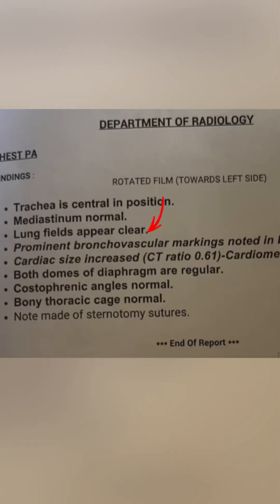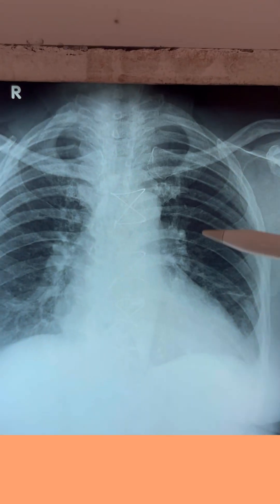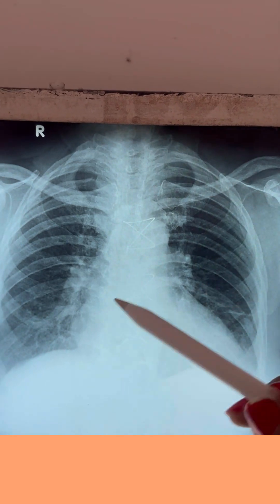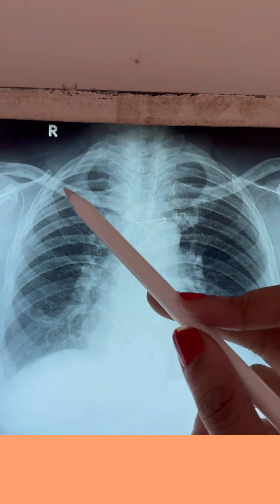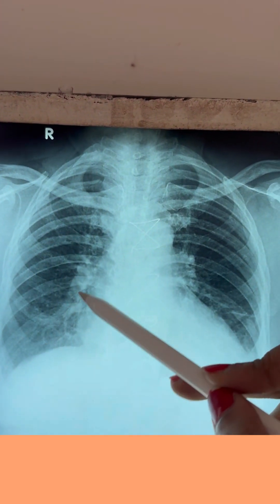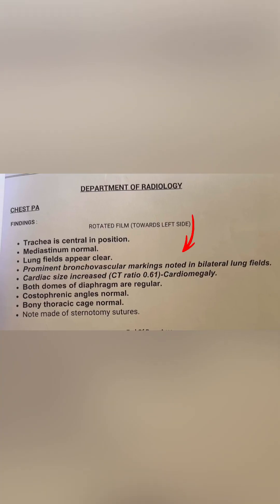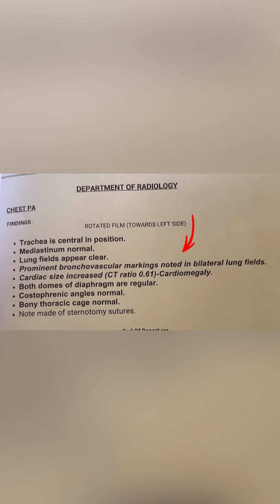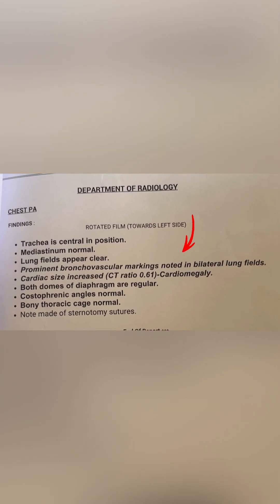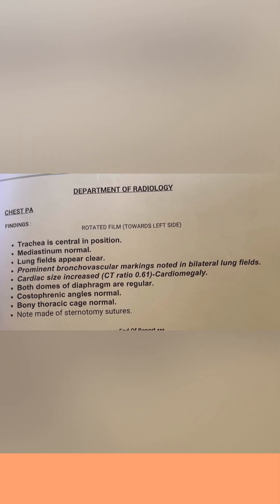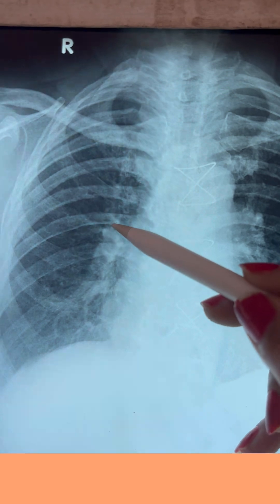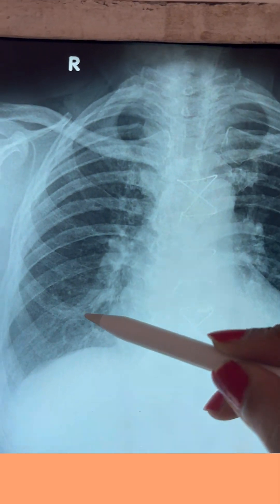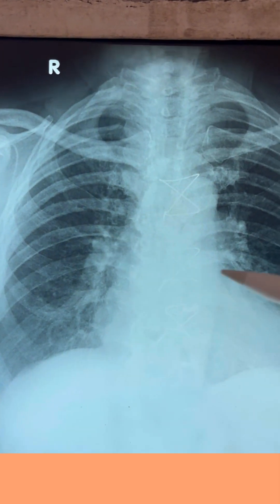Next, check the lung fields on both sides. You can see here the lung fields of the left and right side, which are completely clear and normal. We are also seeing prominent bronchovascular markings in both bilateral lung fields.